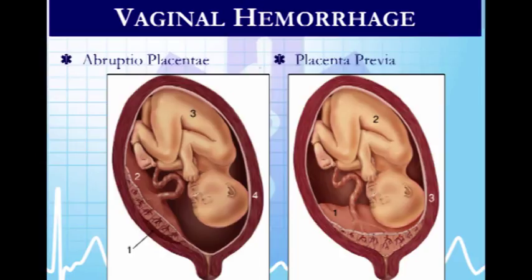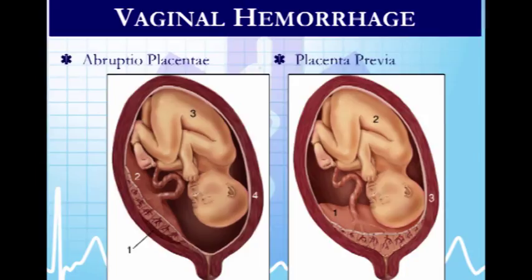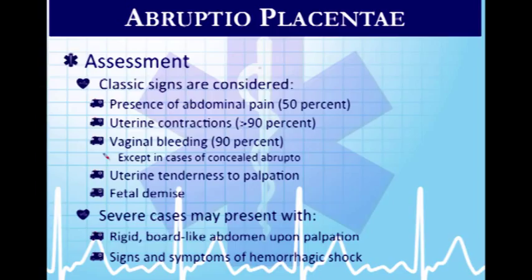Two conditions that may cause a pregnant mom to call 9-1-1 are abruptio placenta and placenta previa. With abruptio placenta, the placenta comes away from the uterine wall, causing hemorrhage underneath. It can be minor or major depending on how much of the placenta has separated. With placenta previa, the placenta is positioned covering the cervical os — either completely or partially.